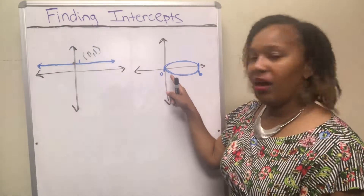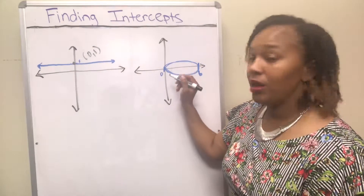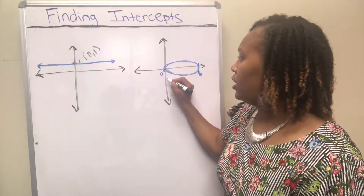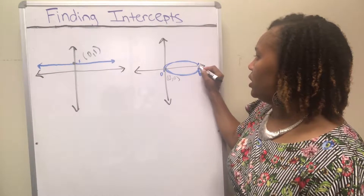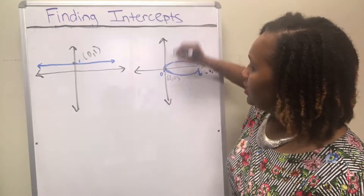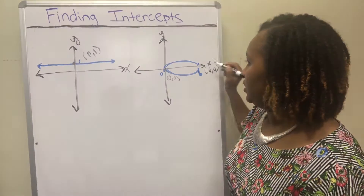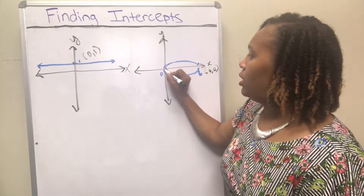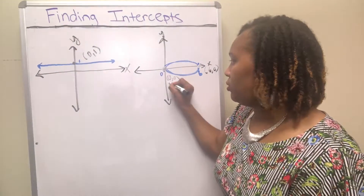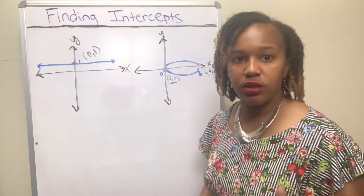In my second graph I have an oval. It crosses both the x and the y axis. It crosses the x axis in two places, so there are two x intercepts. The first one is at the point zero comma zero, and the second one is at the point six comma zero. Where does it cross the y axis? It crosses the y axis right here at the point zero comma zero. So zero comma zero is both an x and a y intercept, and you also have another x intercept at six zero.